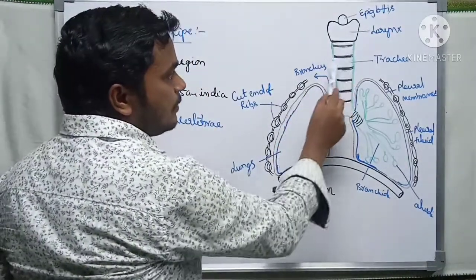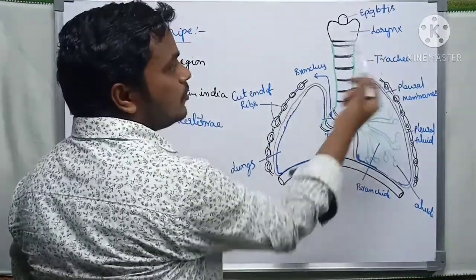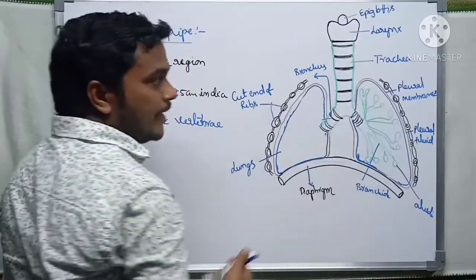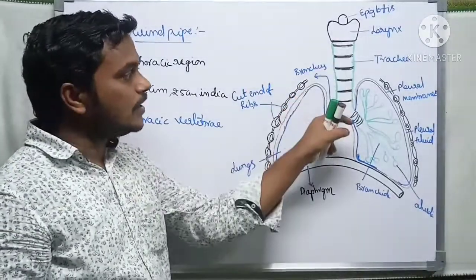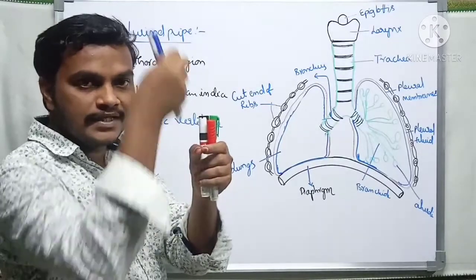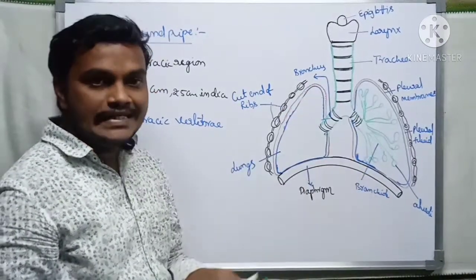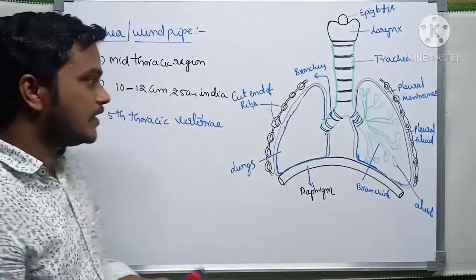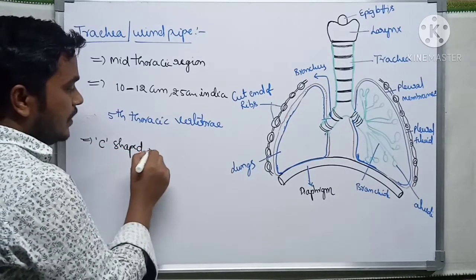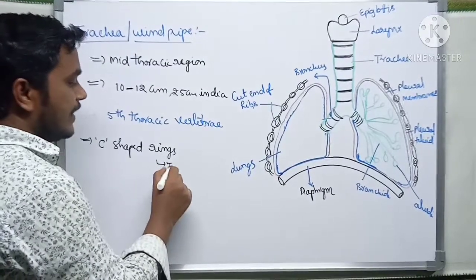The C-shaped rings are incomplete — the ventral region is complete while the dorsal region is incomplete. These C-shaped rings support the tracheal pipe, keeping it always open and preventing collapse. These rings are called tracheal rings and are made up of hyaline cartilage, which is smooth cartilage. Their main function is prevention of collapse of the trachea.